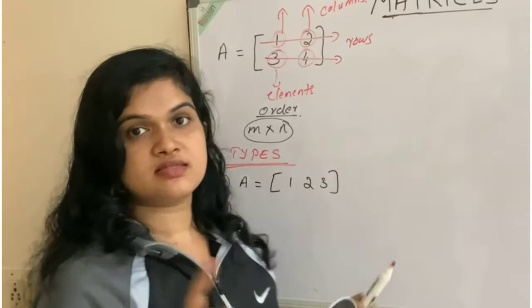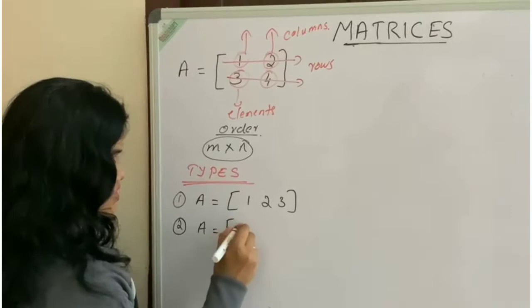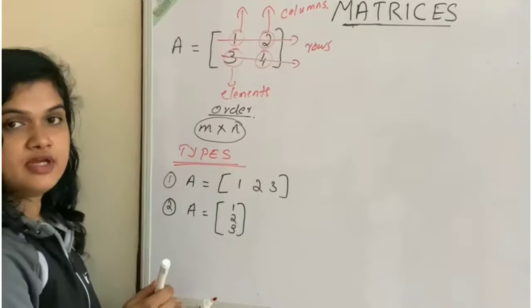The second category is column matrix. Column matrix has only single column. This is an example of a column matrix.